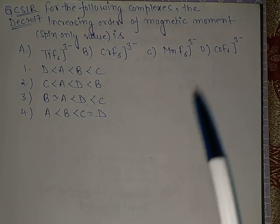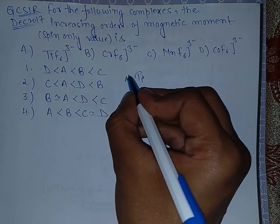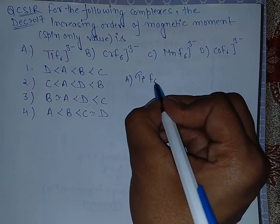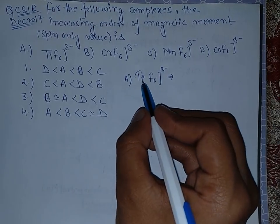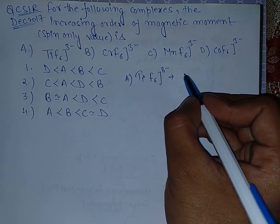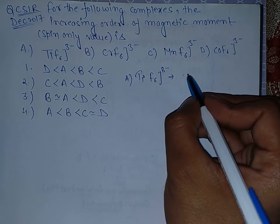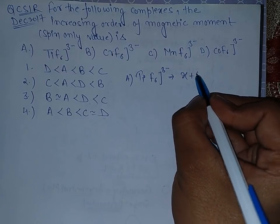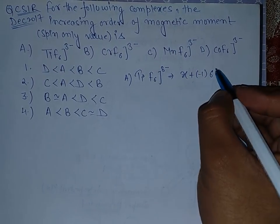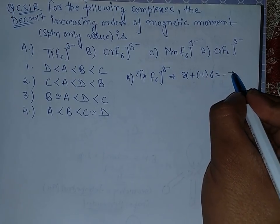Start from the first option, TiF6 3-. This is TiF6 3 negative, so the oxidation state of titanium is plus 3. Titanium is in plus 3. Let's say this is X, then X plus minus 1 into 6 (fluorine has minus 1 charge) equals minus 3.